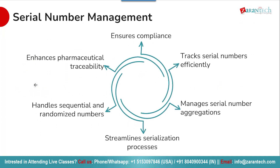Moving on to serial number management — a critical component of SAP ATTP. It streamlines the process around generating, allocating, and tracking the serial numbers applied to individual pharmaceutical products. This capability is essential for complying with global serialization mandates. The serial number management tools handle both sequential and randomized number allocation, and they manage hierarchies and aggregation as individual packs are bundled into cases — key for achieving full traceability from ingredient to patient.